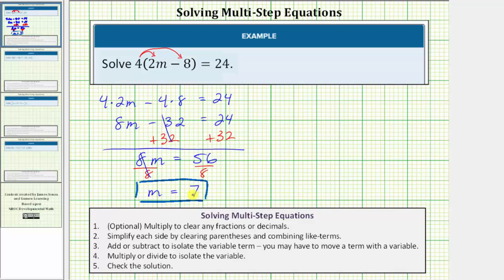Let's check our solution by substituting seven for m back into the original equation. Performing the substitution, we would have four times the quantity two times seven minus eight equals 24.